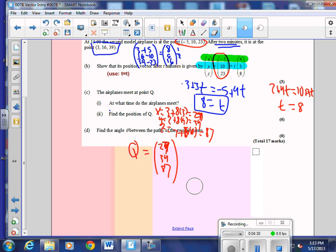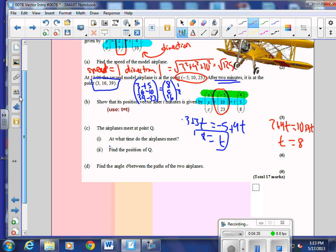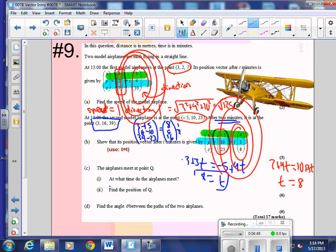Okay, so now the only thing that we have left to do is to find the angle between the two, the angle of the two paths. So to do that, which part of the vector, the point or the direction vector, do we use to find the angle? The direction.